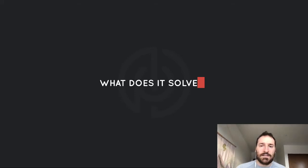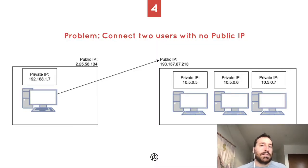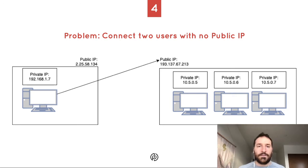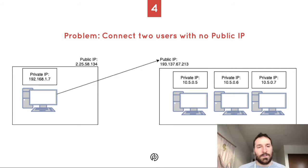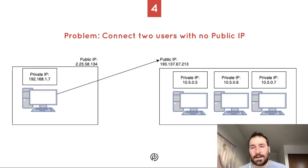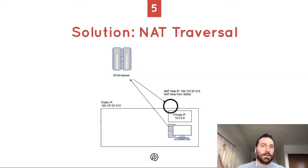At a high level, what does WebRTC solve? WebRTC lets you connect to users that have no public IP. In practice, you can have two computers that are in completely different networks. On the left, imagine that's you on your home network. On the right is someone you want to talk to. Your private IPs don't route to each other — you can't go from 192.168 to a 10.5, you're in different subnets. But you do know each other's public IPs. So how can you talk to each other?